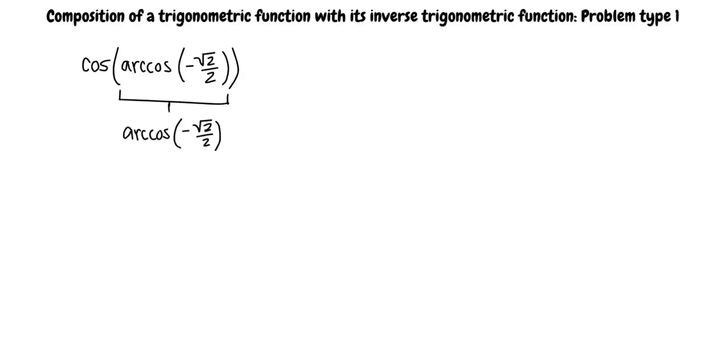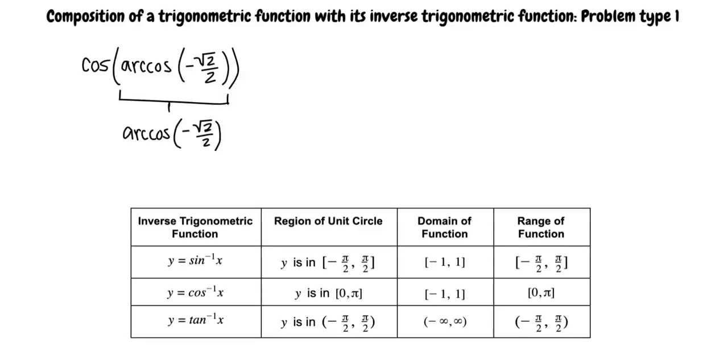Recall that for the inverse cosine functions, you are given the x value of the coordinate point and need to find the angle while keeping in mind the restrictions of the inverse function. Referring back to our table, the restrictions for the cosine inverse function is from 0 to pi.